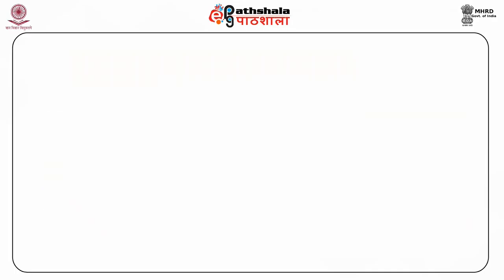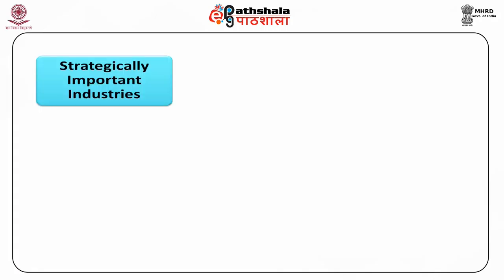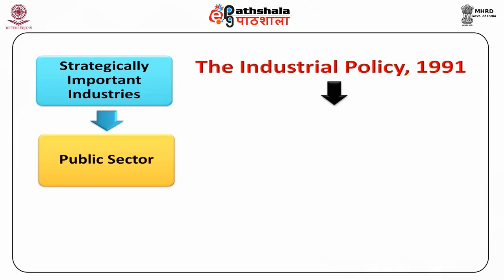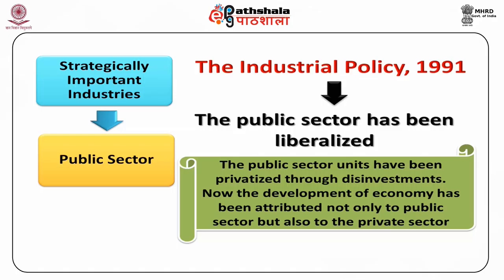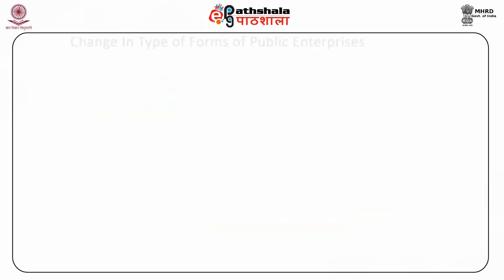Thus, the role of public sector in the economic development of the country had been changed gradually. Initially, all the industries that are strategically important were assigned to public sector only, with little importance to the private sector. But with the introduction of industrial policy 1991, the public sector has been liberalized. Public sector units have been privatized through disinvestments. Now, the development of economy has been attributed not only to public sector but also to the private sector. Both the public and private sector are supposed to actively involve and compete in the market.